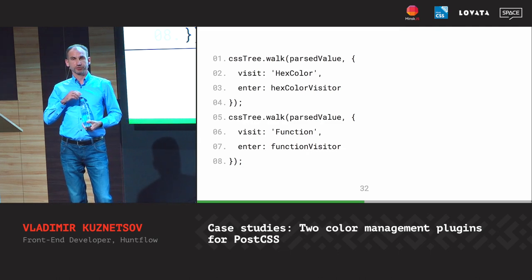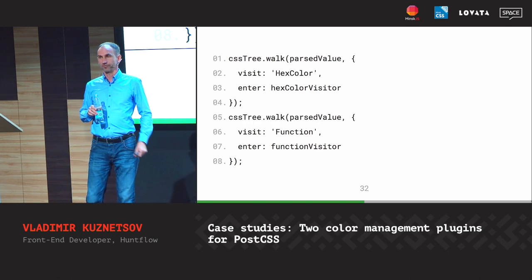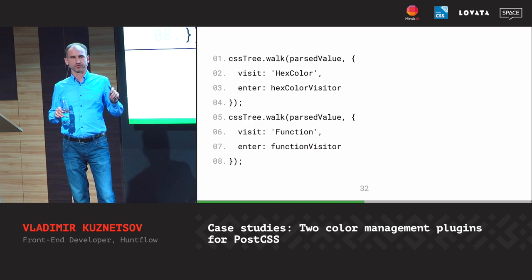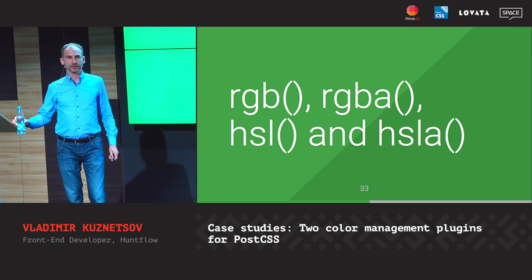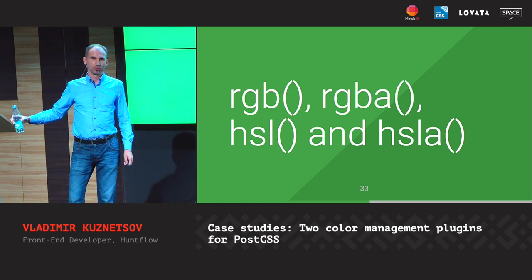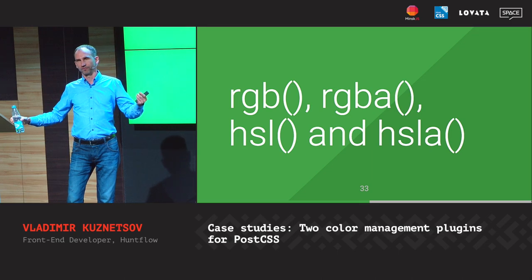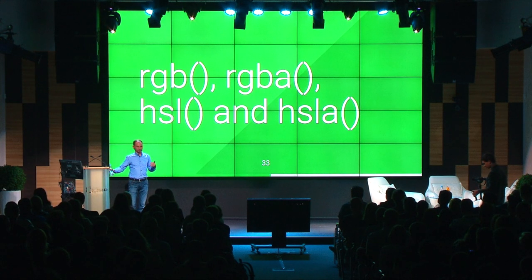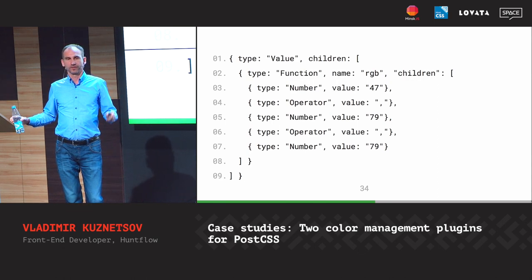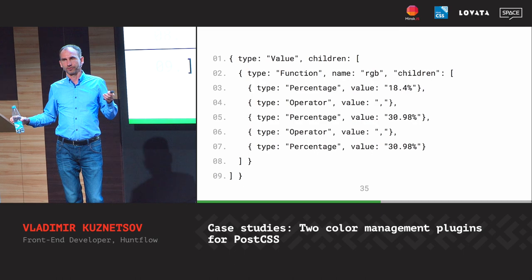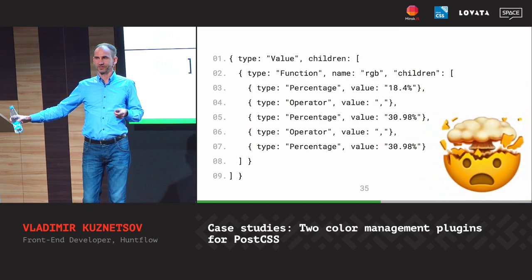The same procedure applies to hex color and color functions. Working with RGB or HSL functions is much more complicated, because you can't just compare values directly — you have to compare color components separately. In the specification you can use absolute values like 47, 78, or relative values in percent. This can really blow your mind.